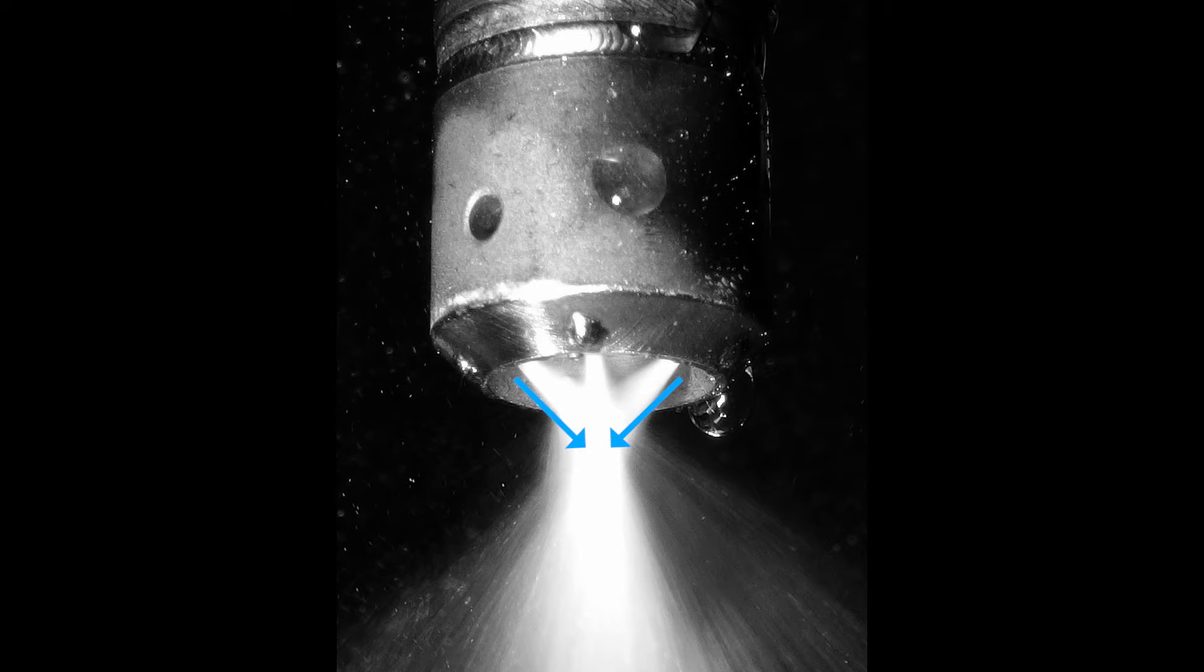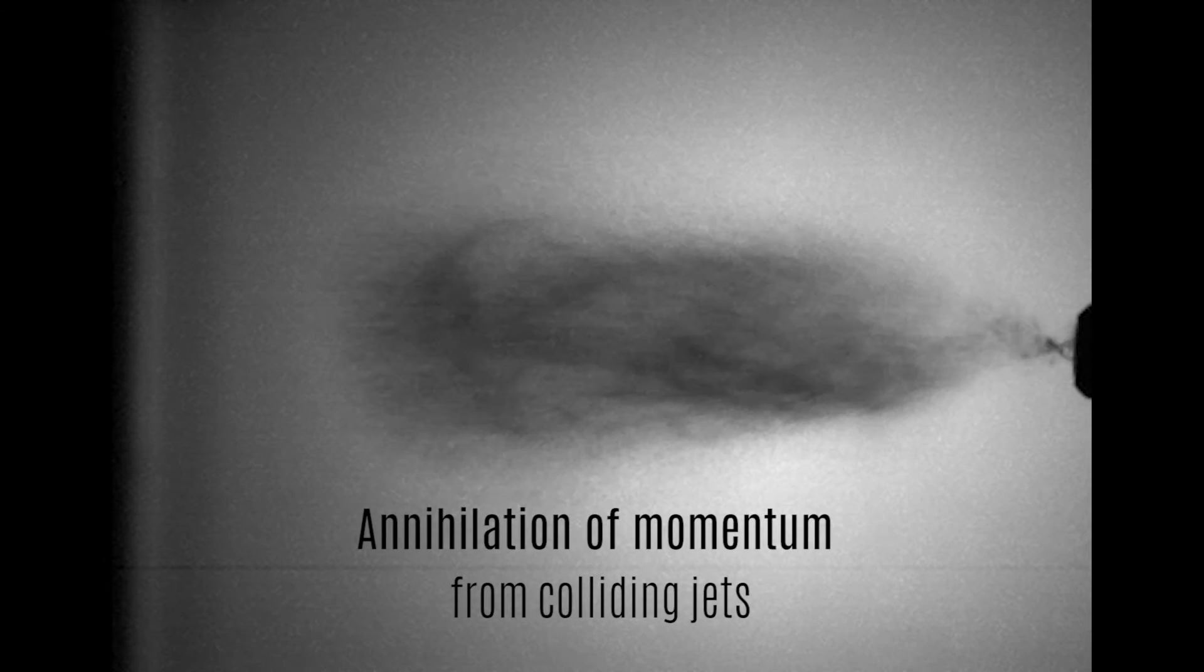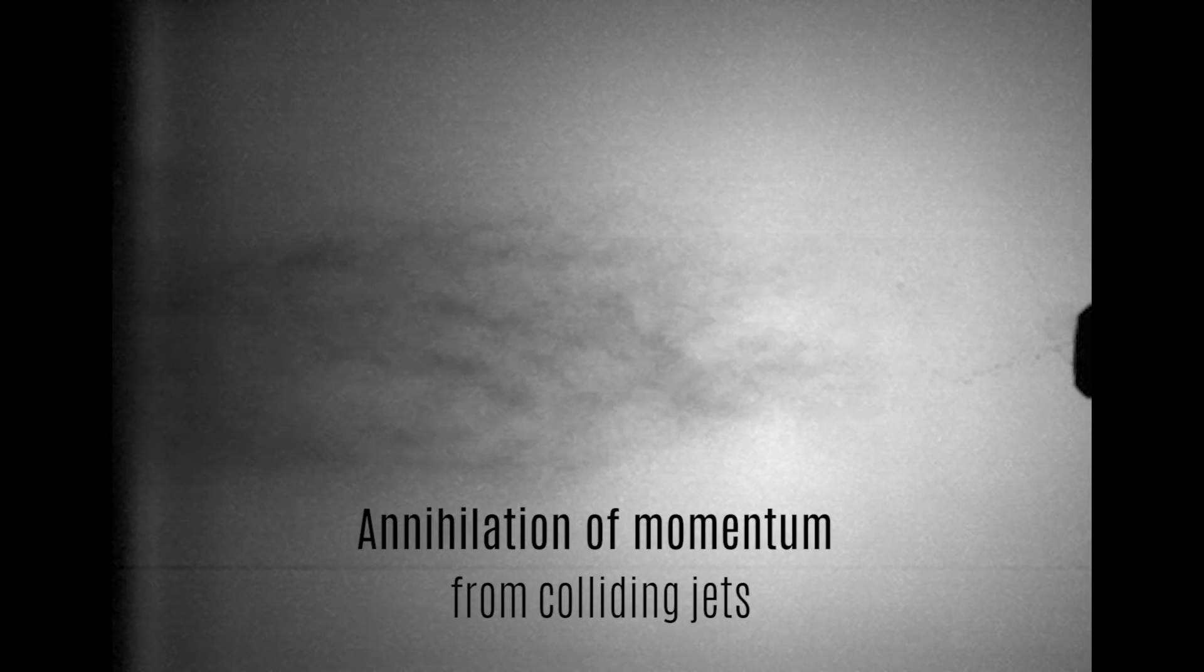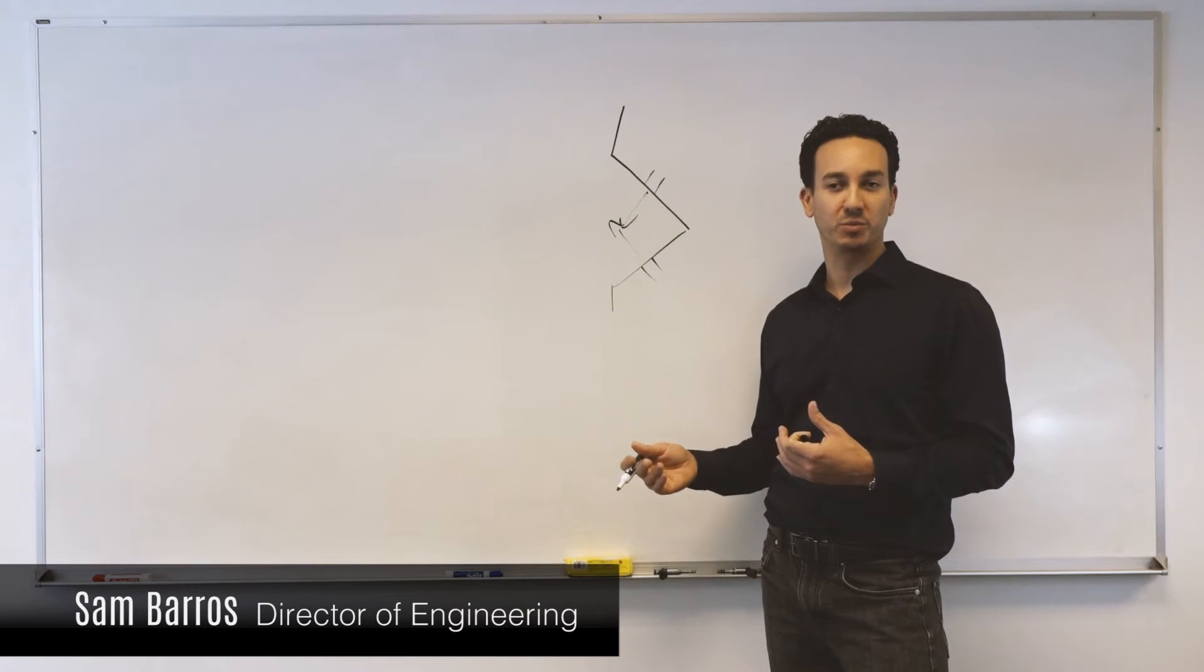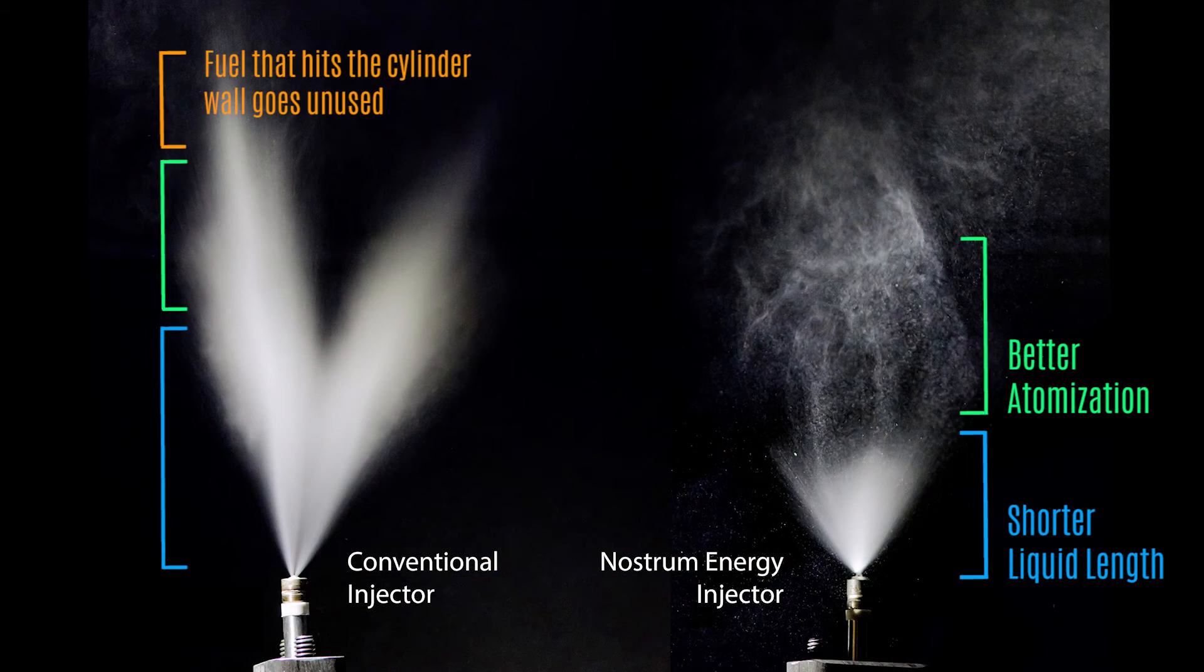Upon colliding, the jets then break up. This is called a kinetic breakup mechanism, which is where the name KDI comes from. Because the jets are breaking up upon colliding with one another, they no longer have to travel through the surrounding air to break up. This means much shorter liquid lengths and much better atomization.